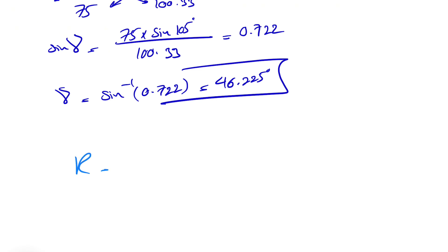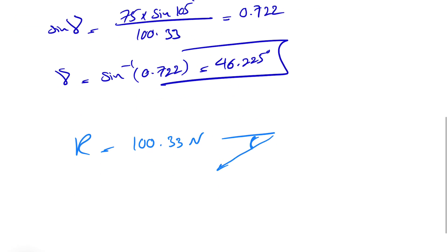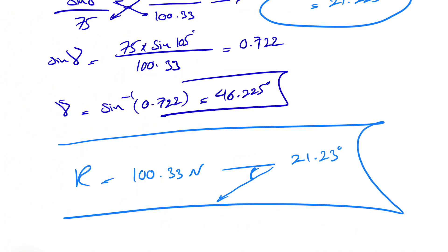And if you want to show our R as the final answer in here, we know we found the magnitude 100.33 Newton. And the angle that we found is the angle with horizontal. So it was this angle right here, which was what we found, 21.23 degrees. So this would be the final answer for this question.